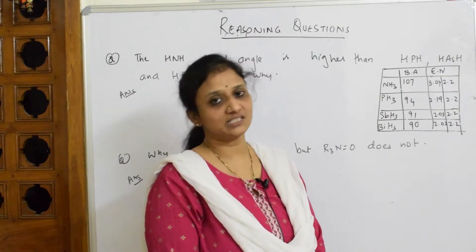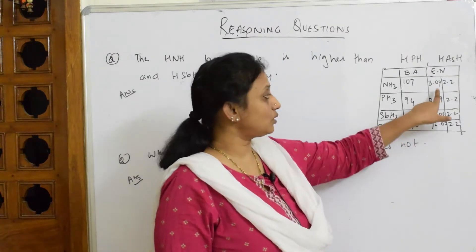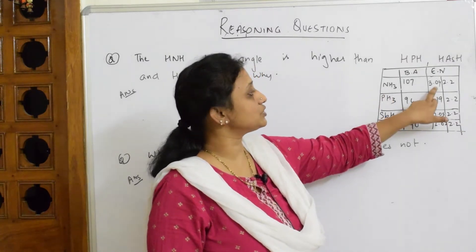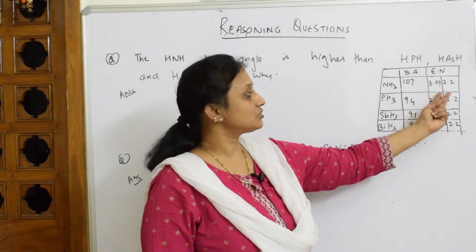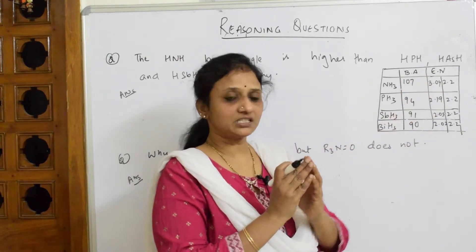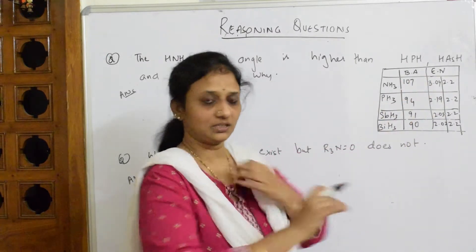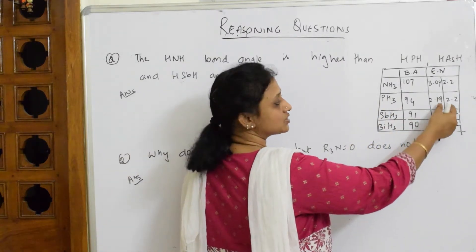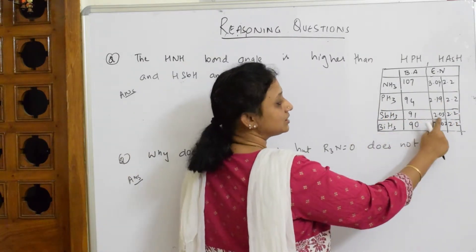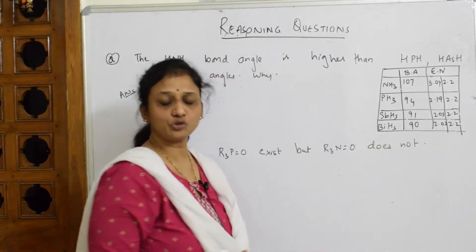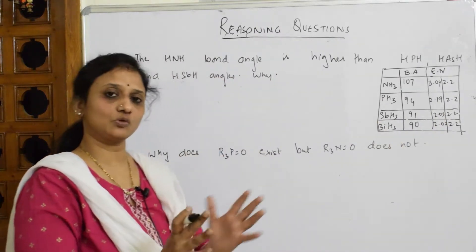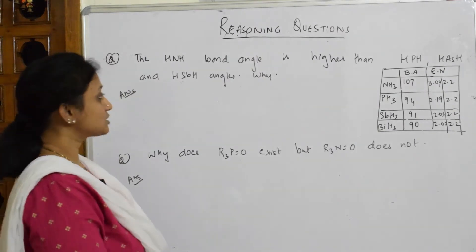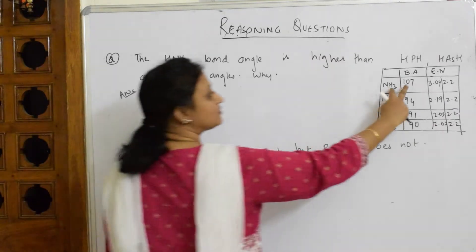Ammonia has a bond angle of 107°, phosphine has 94°, antimony hydride has 91°, and bismuth hydride has 90°. As we go down the group, the bond angle is decreasing. Also, nitrogen's electronegativity is 3.04 and hydrogen's is 2.2, so there is a significant electronegativity difference creating polarity. For phosphine, the difference is much less, and for antimony, the values are almost the same — around 2.19 and 2.0.